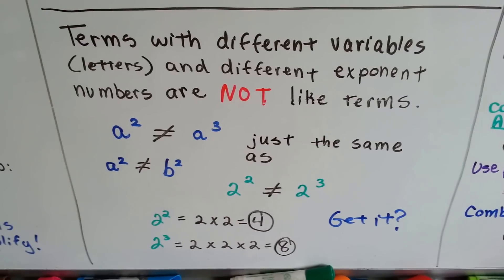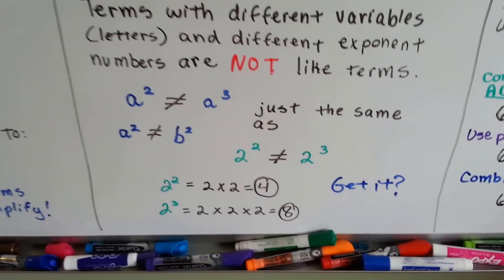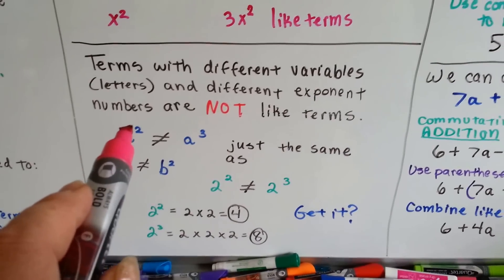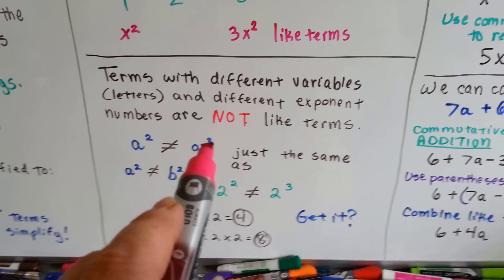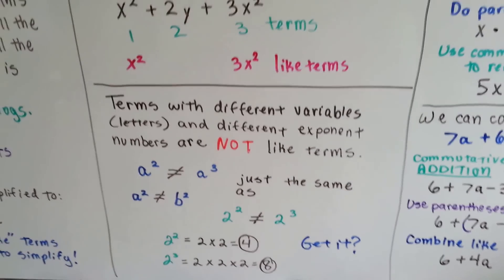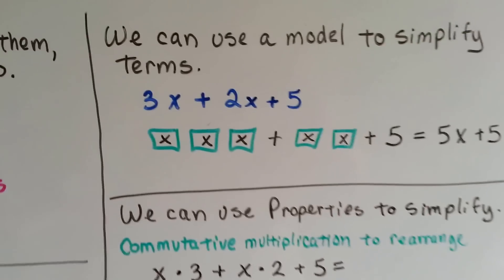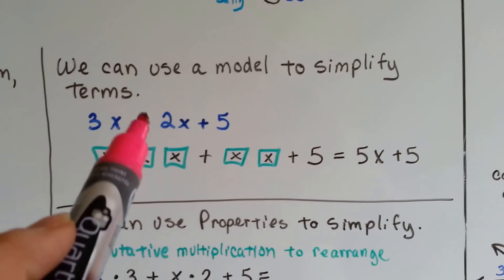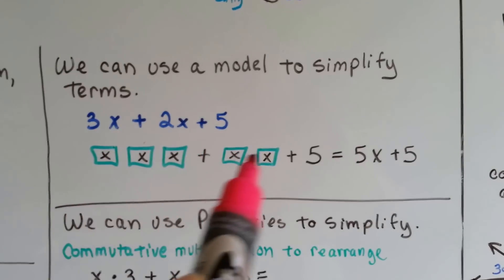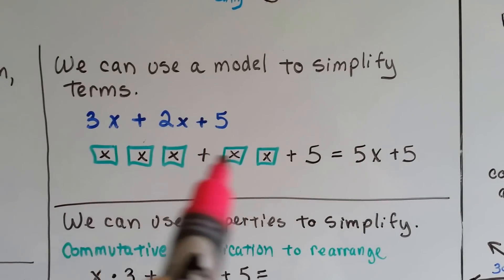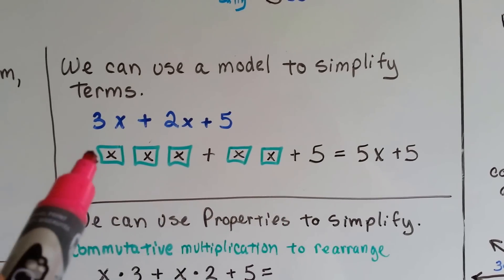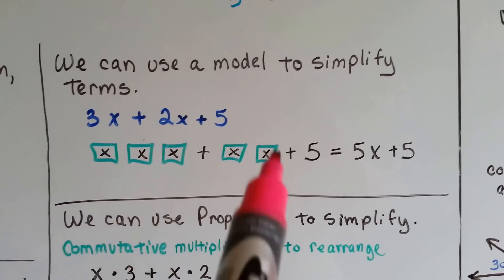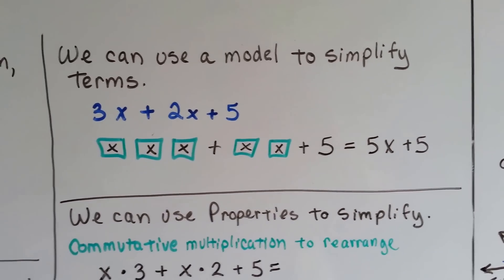Do you understand? They represent two completely different numbers — that could represent 20 and that could represent 36 for all we know. We can use a model to simplify terms. If we've got 3x plus 2x plus 5, we can use models to make our x numbers, and we can have the 3 and the 2 and see that there's 5 altogether, so we have 5x plus 5.